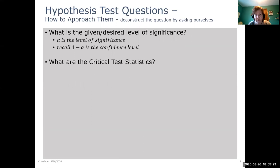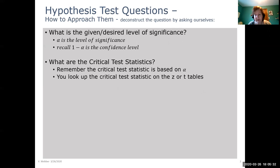We would then need to determine what our critical test statistics are. And remember that is based on what our chosen or given alpha value is. We would look up our critical test statistic on our z or t tables and again for our purposes we'll just use the z's.